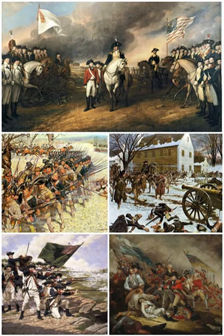Burgoyne's defeat had drastic consequences. France formally allied with the Americans and entered the war in 1778, and Spain joined the war the following year as an ally of France but not as an ally of the United States. In 1780, the Kingdom of Mysore attacked the British in India, and tensions between Great Britain and the Netherlands erupted into open war. In North America, the British mounted a southern strategy led by Charles Cornwallis which hinged upon a Loyalist uprising, but too few came forward. Cornwallis suffered reversals at King's Mountain and Cowpens. He retreated to Yorktown, Virginia, intending an evacuation, but a decisive French naval victory deprived him of an escape. A Franco-American army led by the Comte de Rochambeau and Washington besieged Cornwallis' army and, with no sign of relief, he surrendered in October 1781.